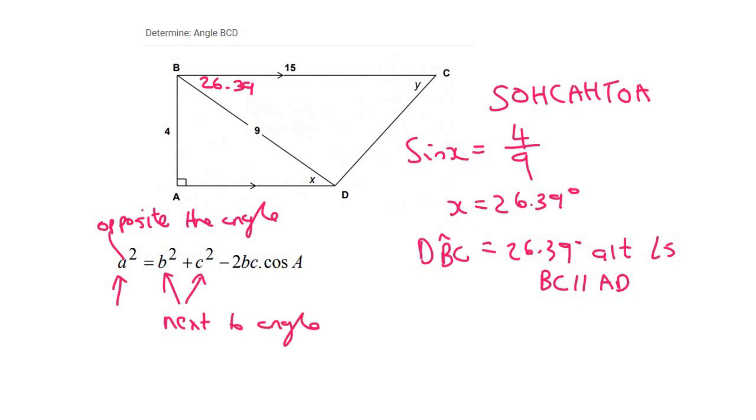So if we're using this angle, then CD is the opposite side, and then the 15 and the 9 are next to, and that's going to give us CD squared is equal to 64.136.